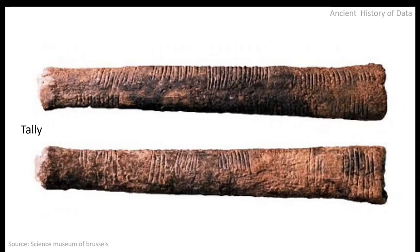So where did we start getting data? The earliest example we have of humans storing and analyzing data are the Tally Sticks. The Ishango bone was discovered in 1960 in what is now Uganda, and it's thought to be one of the earliest pieces of evidence of prehistoric data storage. Paleolithic tribes used to mark notches into sticks and bones to keep track of trading activities or supplies.